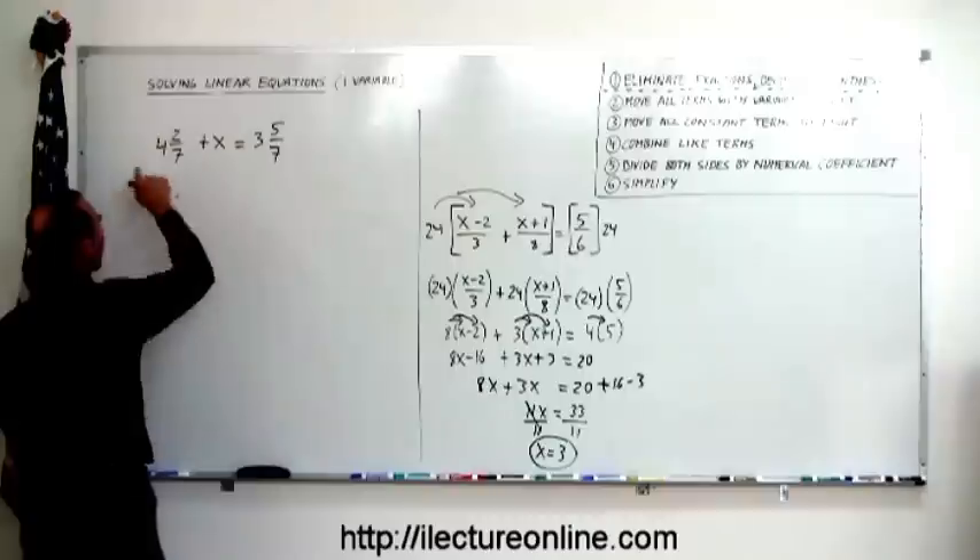You mix integers and fractions together. If you're going to solve linear equations that have these kinds of fractions in them, I recommend that you first turn them into what we call improper fractions, where you turn this into simply a numerator and denominator. And the way you do that is this way.